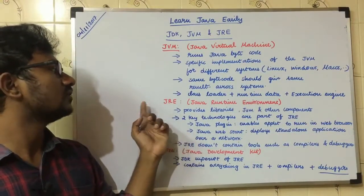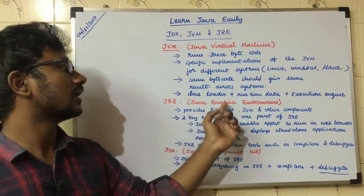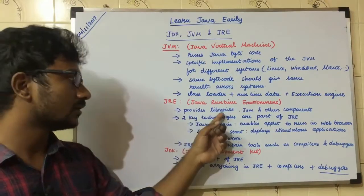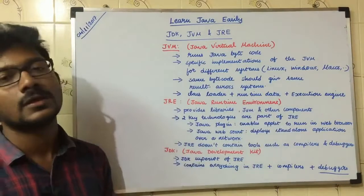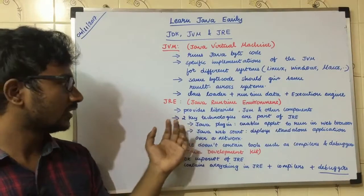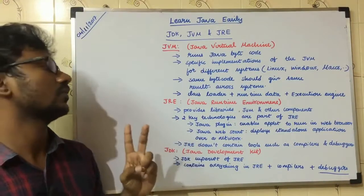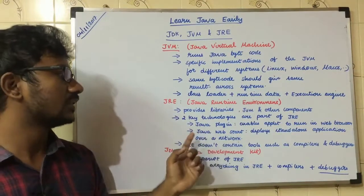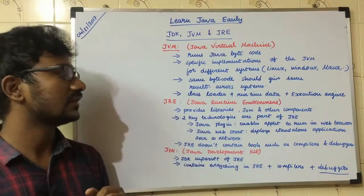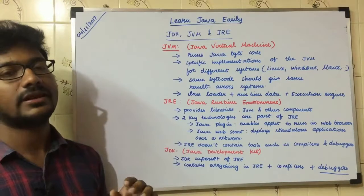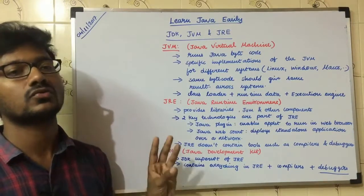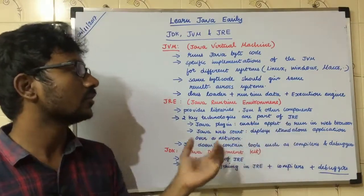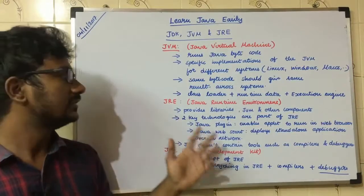The next important thing is JRE — Java Runtime Environment. JRE provides libraries, JVM, and other components. Two key technologies that are part of JRE are Java Plugin and Java Web Start. If you are using a Java Plugin, you can run an applet program in a web browser. That Java Plugin is part of JRE.